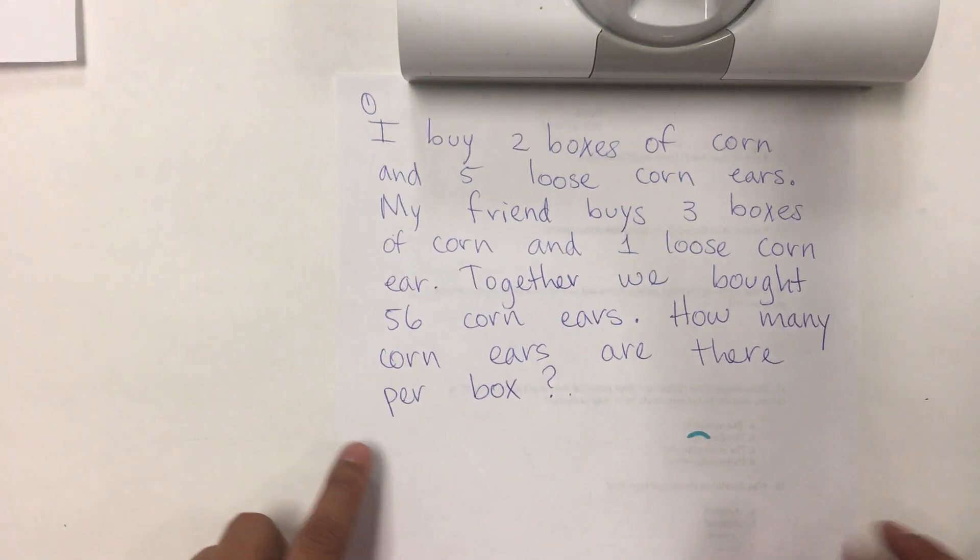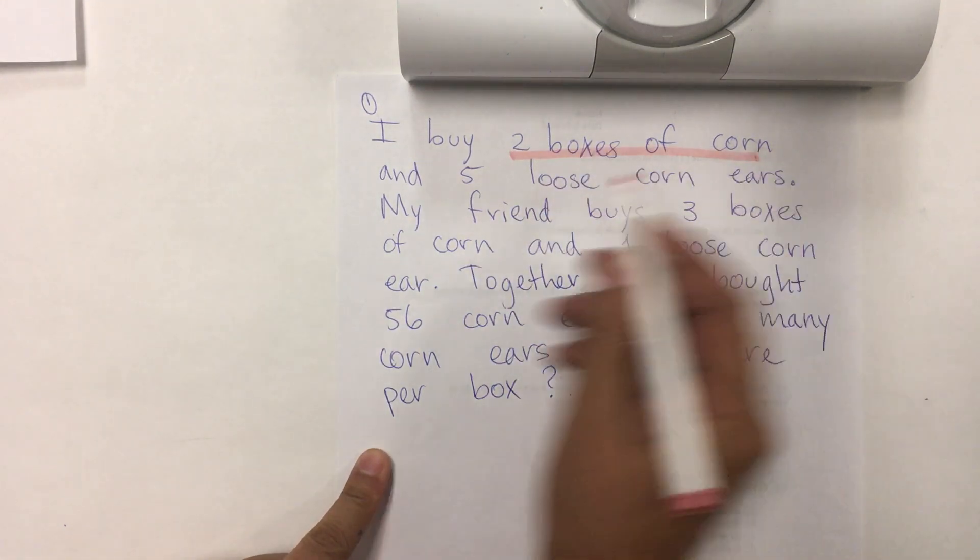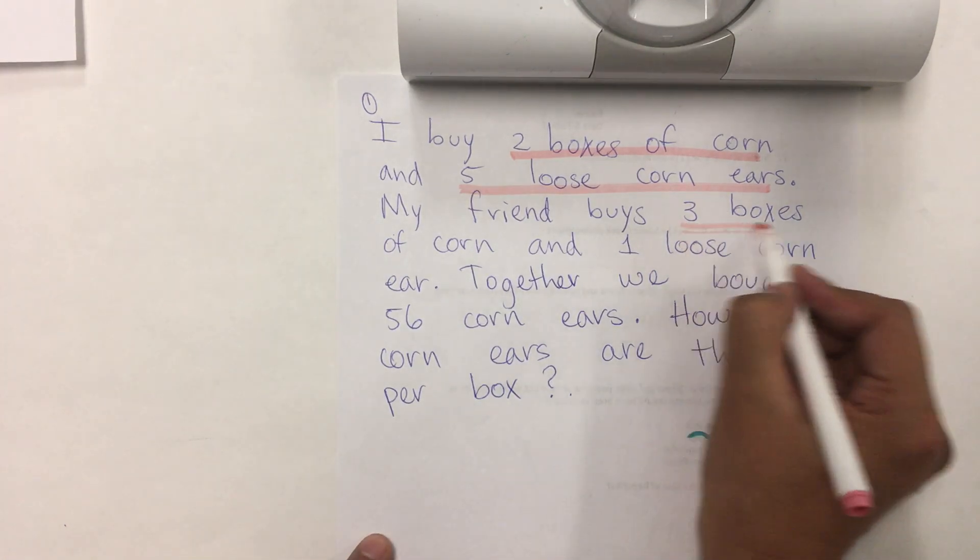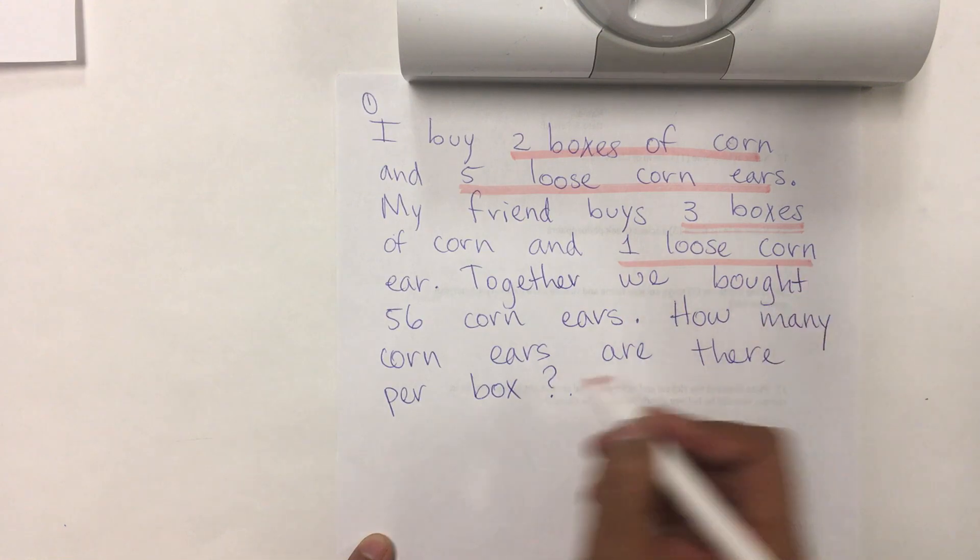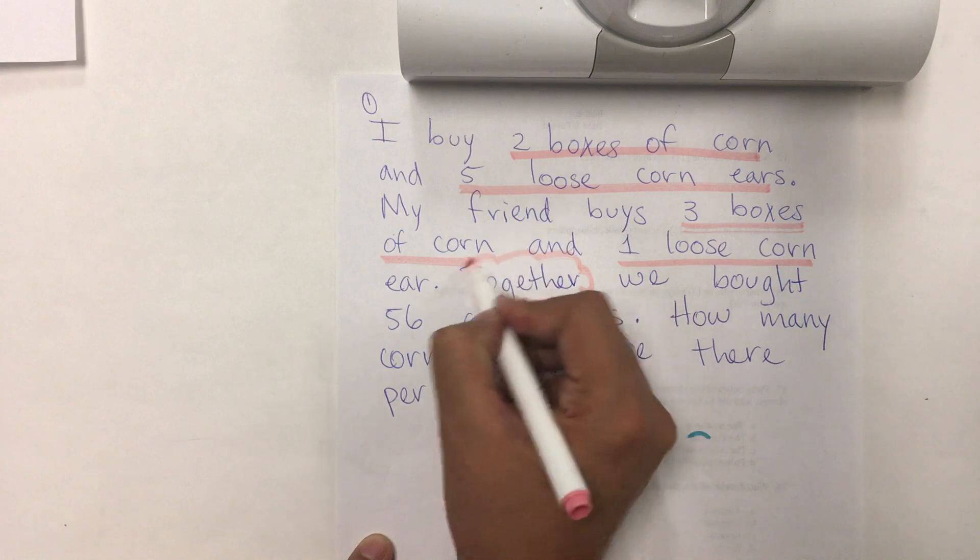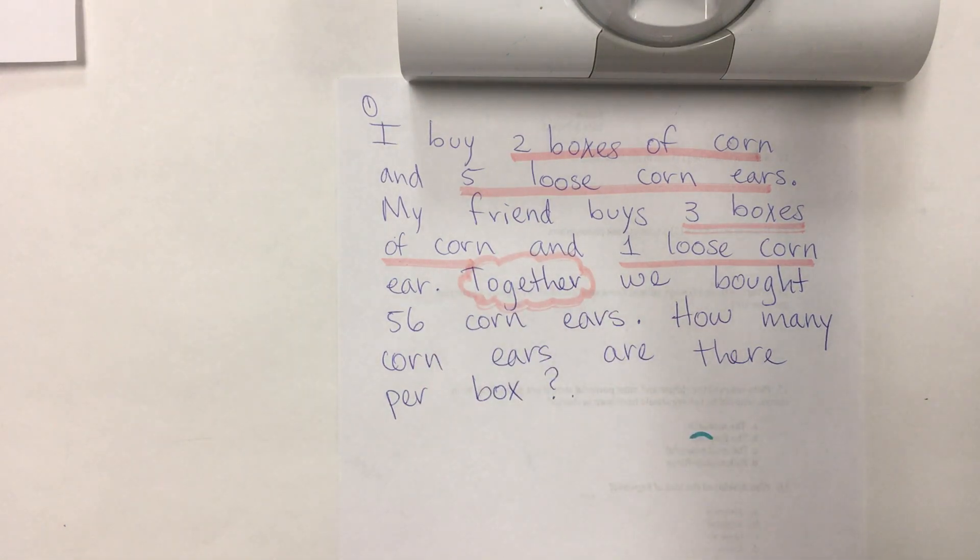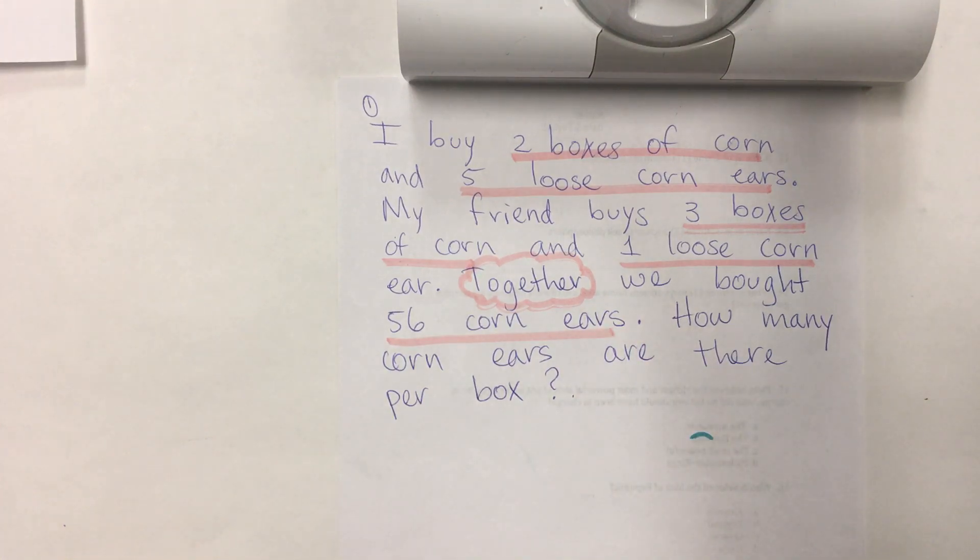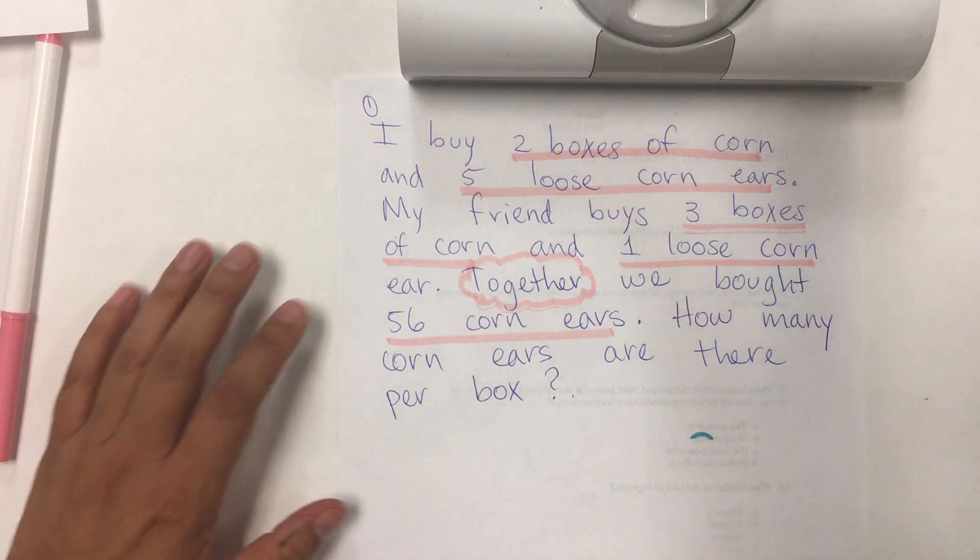Here we have the first word problem. It says, I buy 2 boxes of corn and 5 loose corn ears. So 2 boxes of corn, 5 loose corn ears. My friend buys 3 boxes of corn and 1 loose corn ear. Together, we bought 56 corn ears. How many corn ears are there per box?